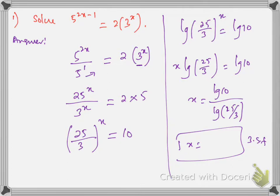There are 3 steps: First, simplify the powers using the rules of indices. Then, get the standard index form — do the basic algebra for that. And then, take the log on both sides. By taking log on both sides, you can get the answer.